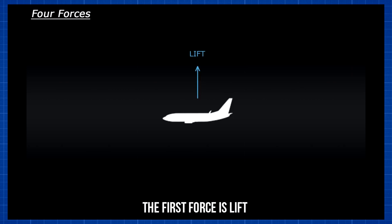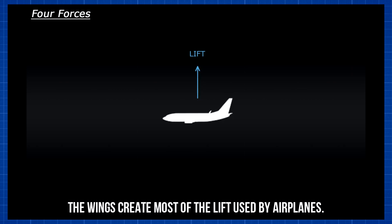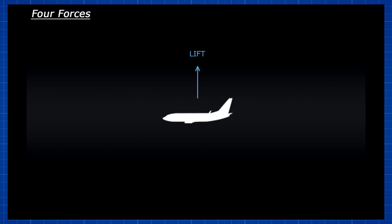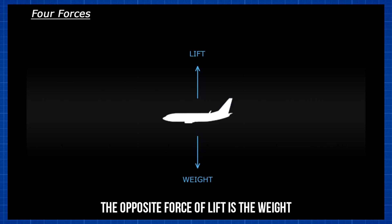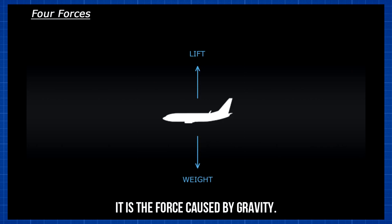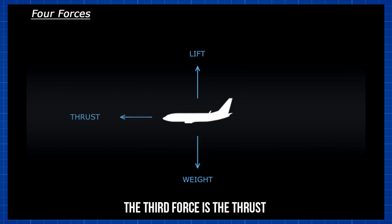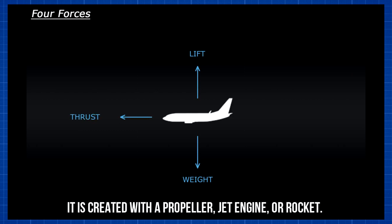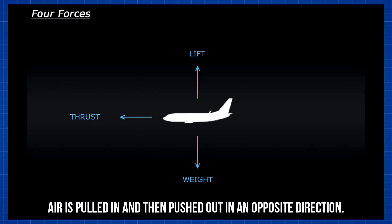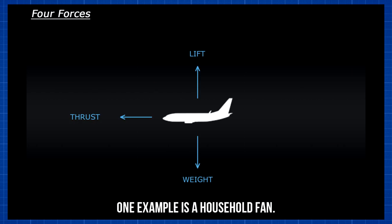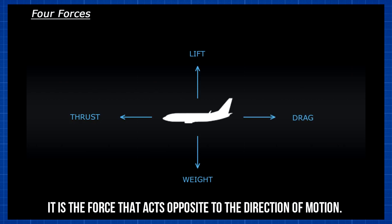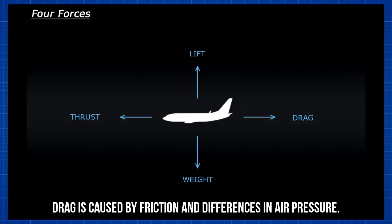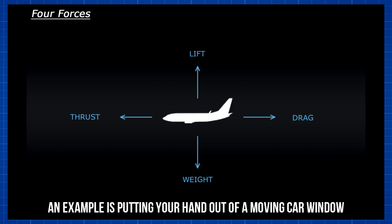The first force is lift — it is the force that holds an airplane in the air. The wings create most of the lift used by airplanes. The opposite force of lift is weight, the force caused by gravity. The third force is thrust — it is the force that moves an aircraft in the direction of motion. It is created with a propeller, jet engine, or rocket. Air is pulled in and then pushed out in the opposite direction; one example is a household fan. The last force is drag — it is the force that acts opposite to the direction of motion and tends to slow an object. Drag is caused by friction and differences in air pressure. An example is putting your hand out of a moving car window and feeling it pull back.